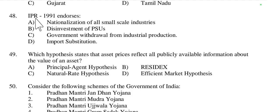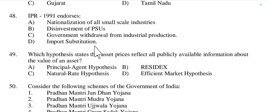Question 48: IPR 1991 — Industrial Policy Resolution, also called the New Industrial Policy or New Economic Policy — endorses disinvestment of public sector units. It aims to reduce the role of government in business and encourage private investment including FDI (Foreign Direct Investment). This shift was part of a larger effort to enhance efficiency and competitiveness in the economy. So option B is right.